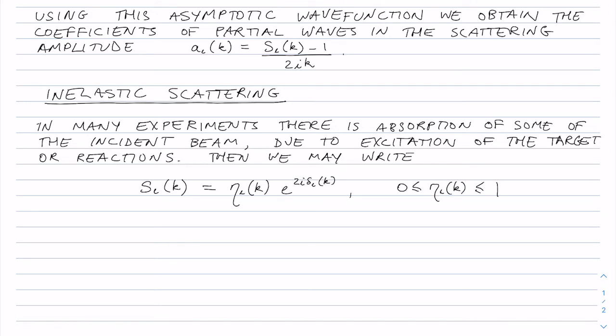So the simplest modification that we could make to the phase factor e to the 2 i delta is to introduce a factor eta which depends on the partial wave L and depends on the incoming wave number K. And if this eta is between 0 and 1, this will account for a certain level of absorption for that particular incoming beam energy and partial wave. So let's introduce this simple modification and see where it takes us.